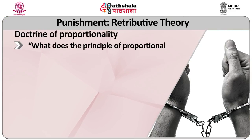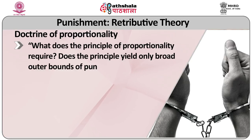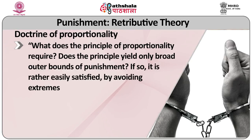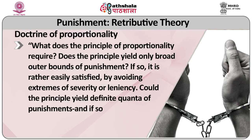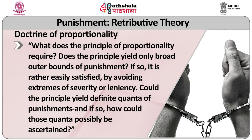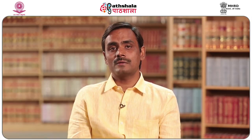The doctrine of proportionality has, however, been beset with a few escaping questions: namely, what does the principle of proportionality require? Does the principle yield only broad outer bounds of punishment? If so, it is rather easily satisfied by avoiding extremes of severity or leniency. Could the principle yield definite quanta of punishment, and if so, how could those quanta possibly be ascertained? As regards juristic and judicial writings on the issue, we come across ample literature that helps us understand the content and contour of the principle of just desert.